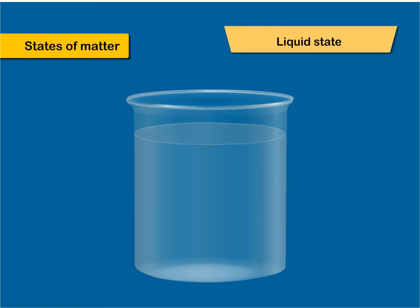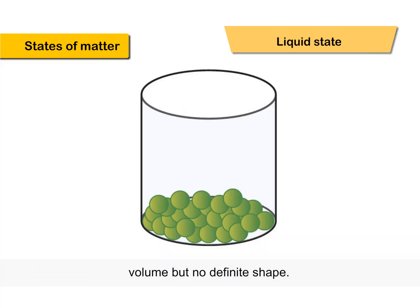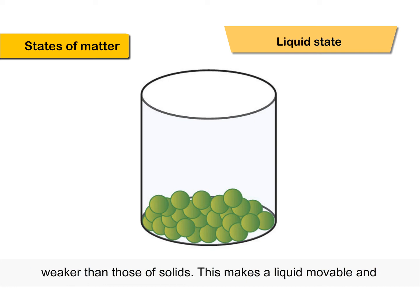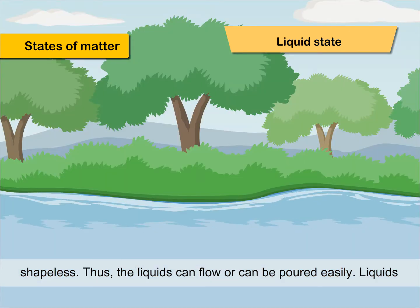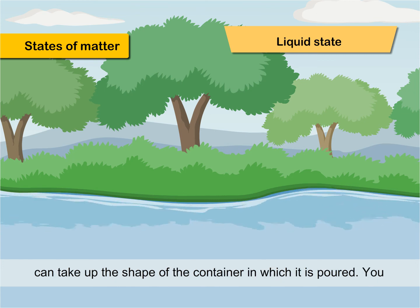Liquid State: The molecules are loosely packed in liquids. Liquids have a definite volume but no definite shape. The molecules in liquids move relative to each other by forces which are weaker than those of solids. This makes a liquid movable and shapeless. Thus, liquids can flow or can be poured easily, and can take up the shape of the container in which they are poured.